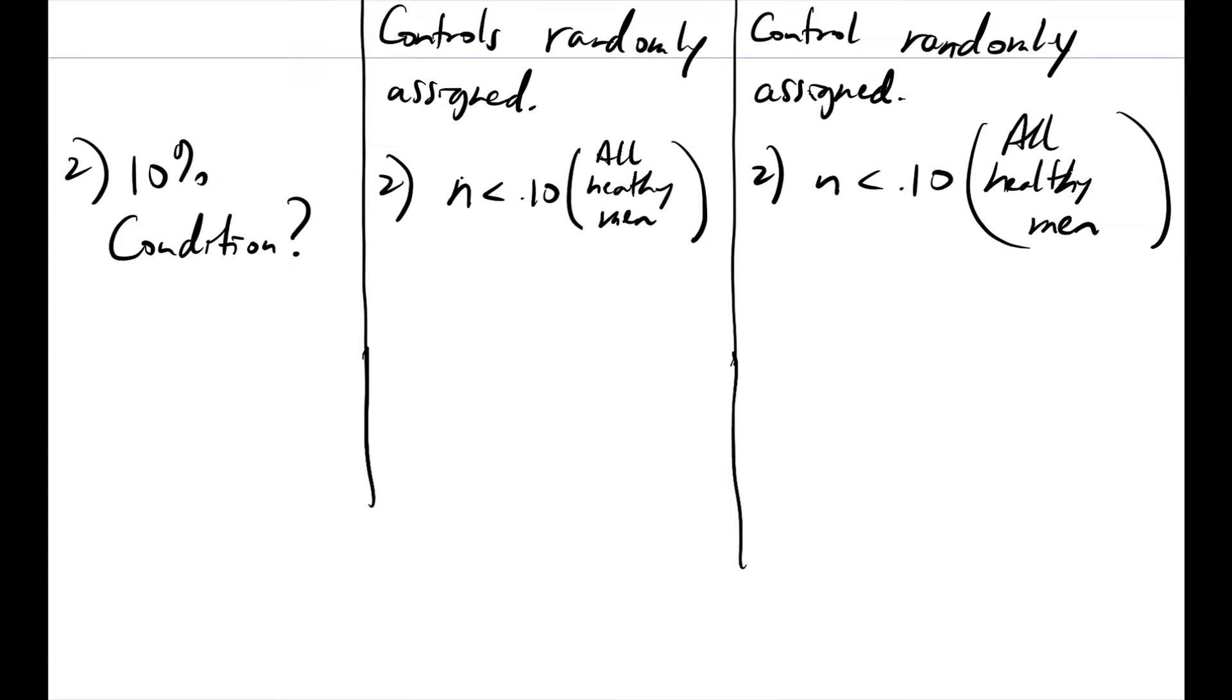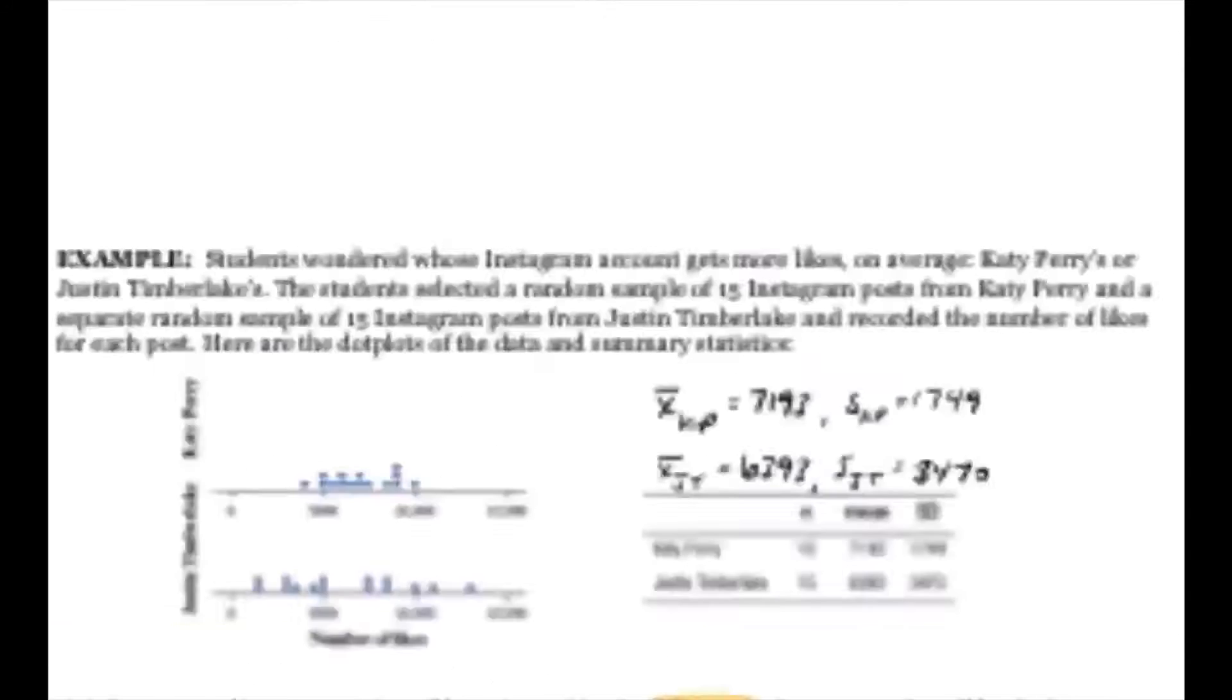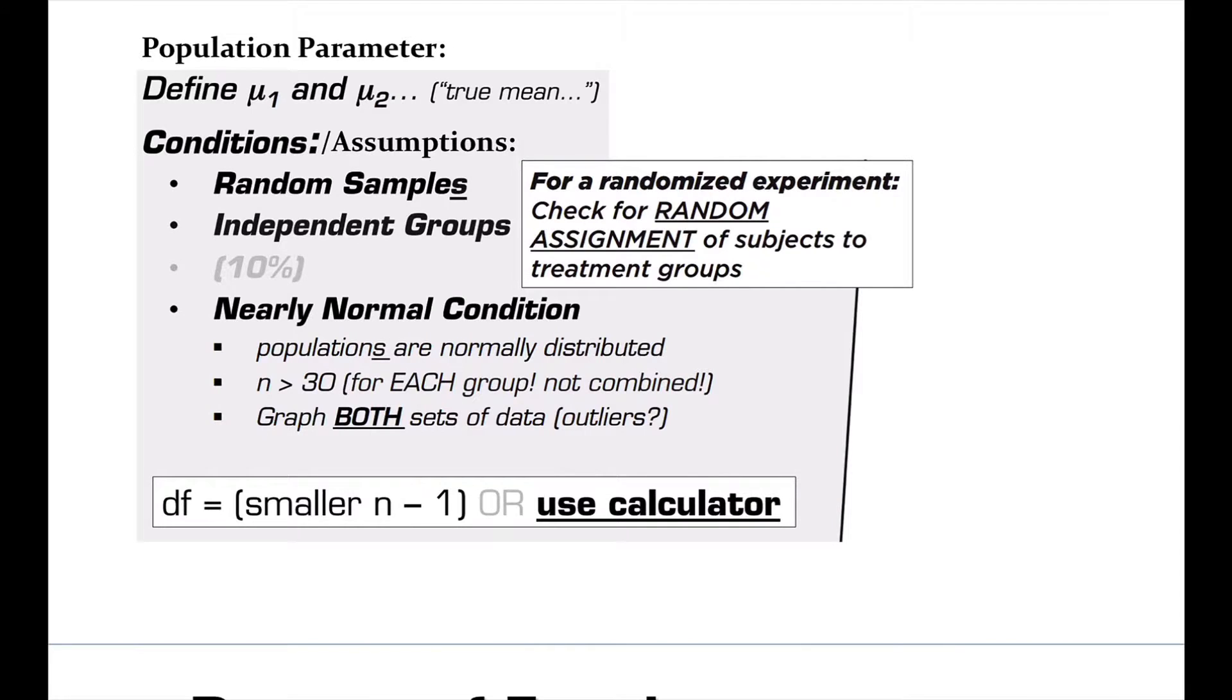And then the last one is normality. So it's going to be one of the three from our list. Populations are normally distributed, n is greater than 30, or graph. Does it say populations of these healthy men, of their blood pressures are normally distributed? Nope. N is 30? Remember it's separate, each group is 30, not added together. So that one doesn't work. So we do have L1 and L2, right?